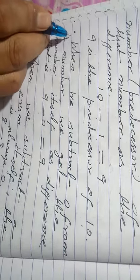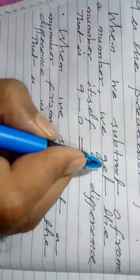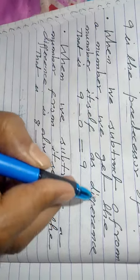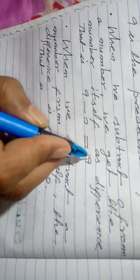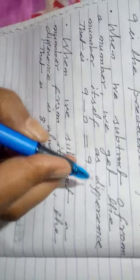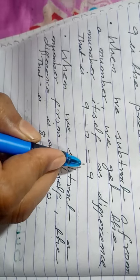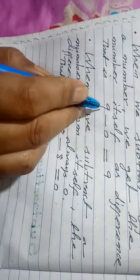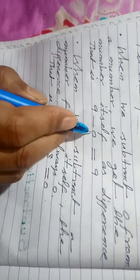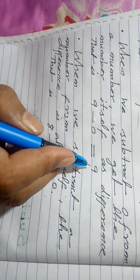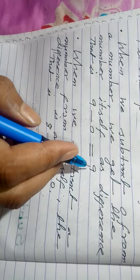Next facts. When we subtract 0 from a number, we get the number itself as difference. That is, 9 minus 0 equal to 9. We get the number itself.